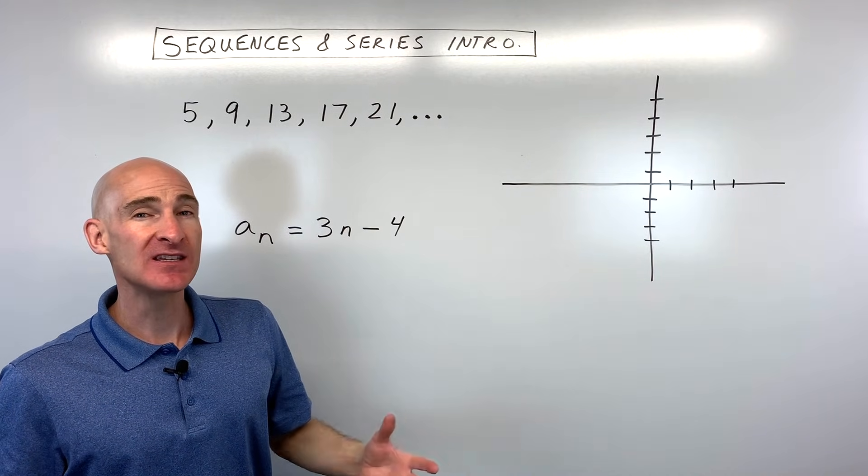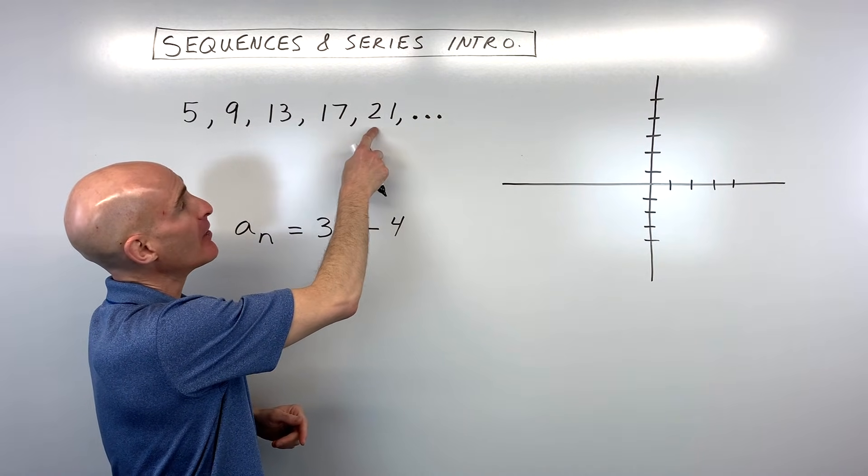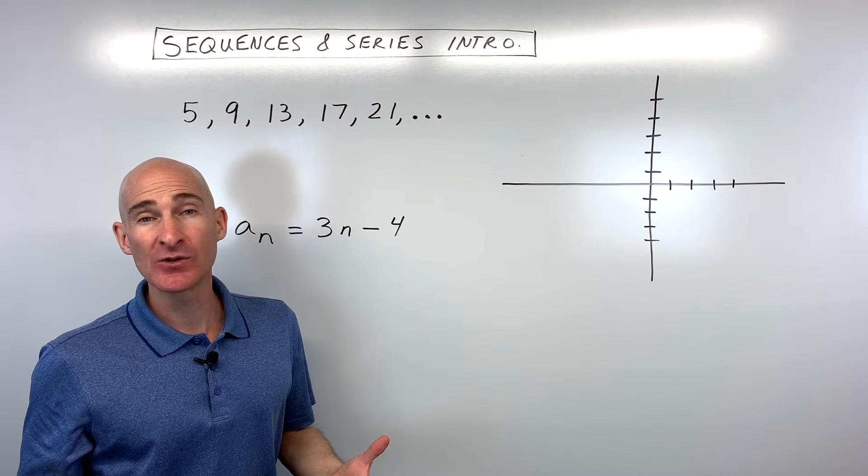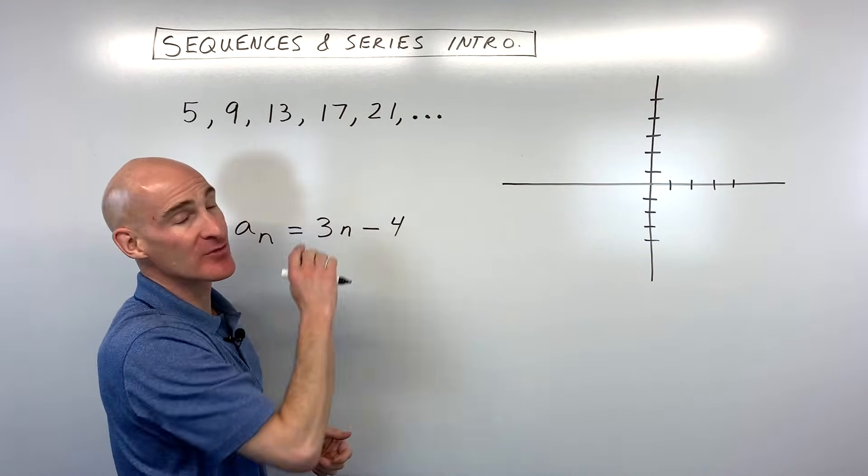A sequence is basically a list. You can see the terms are separated by a comma, and that's exactly what a sequence is. Whereas a series is actually a sum where you're adding the terms together.